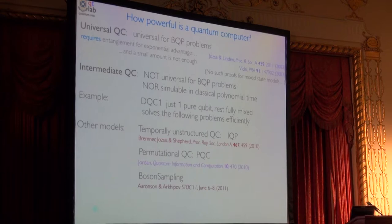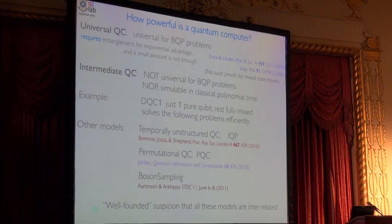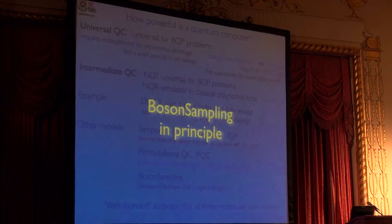It turns out it's strongly correlated with something called discord, and it's a whole other story. I commend to you this nice overview article in Nature from 2011 on that. But there's a bunch of other problems like this, these intermediate quantum computers, temporally unstructured quantum computers, permutational quantum computers, and boson sampling. And if you talk to complexity theorists, they have a well-founded suspicion that all of these things are interrelated. And they're completely different physical systems. Some are spins. Some are photons. There's no physics in common. But they think there's something, some kind of deep interrelation. So studying one might throw light on another. So let me take you to boson sampling.